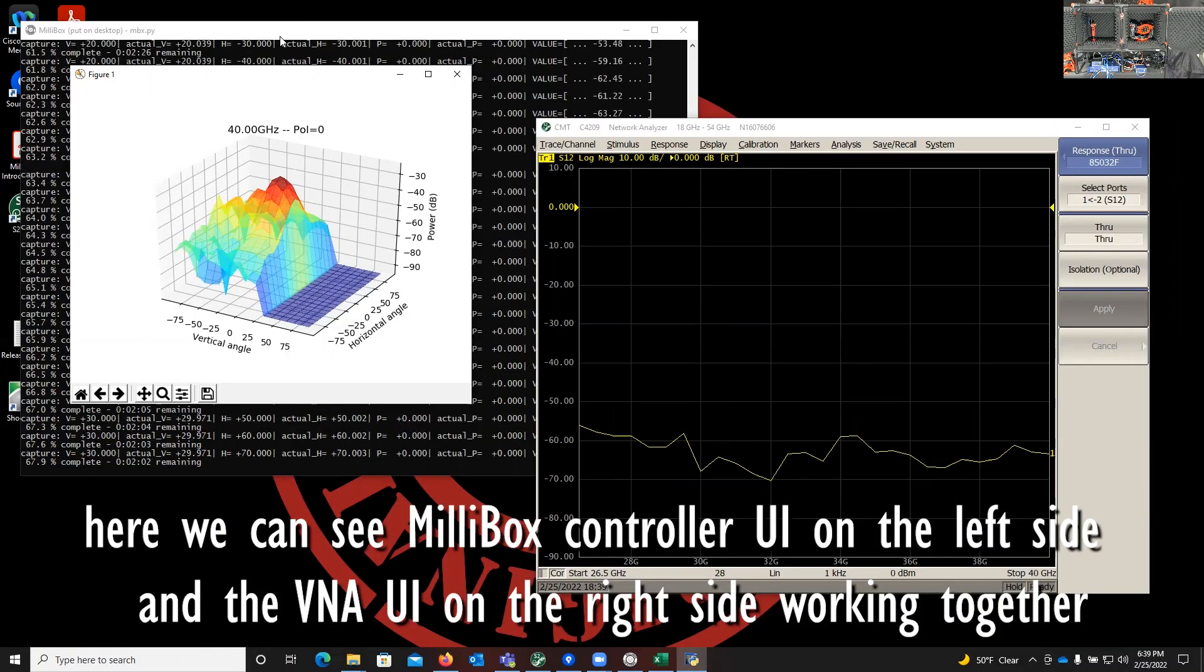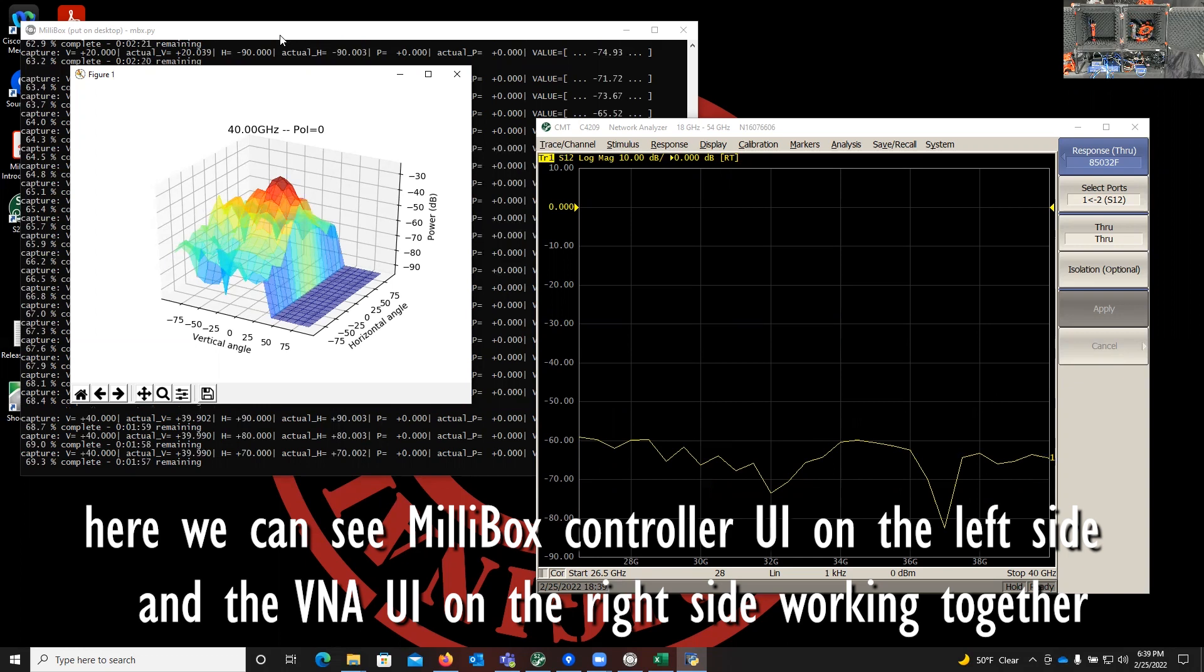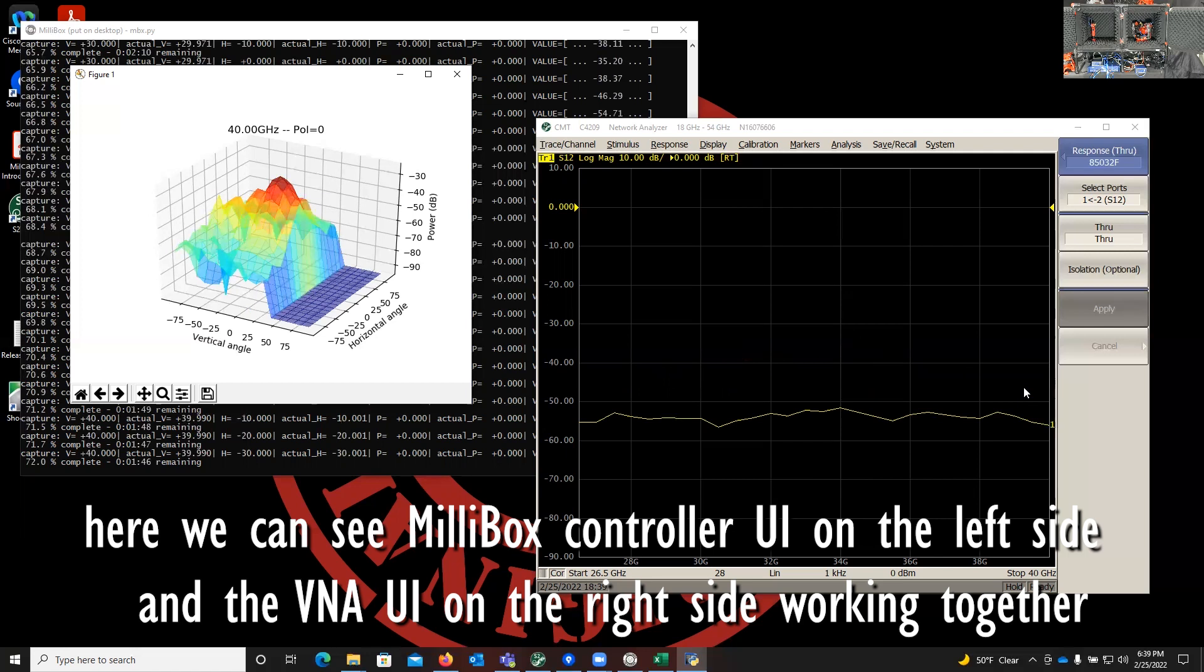So here we can see that on one side, we have the Millibox software, the positioner and the controller, where we're doing the acquisition and visualizing it in real time. On the other side, we have the VNA where we're doing the acquisition.